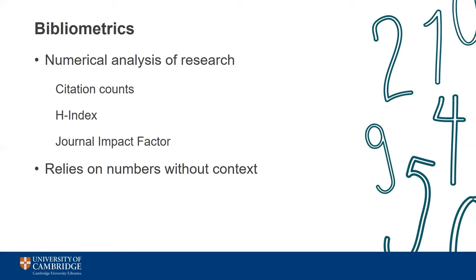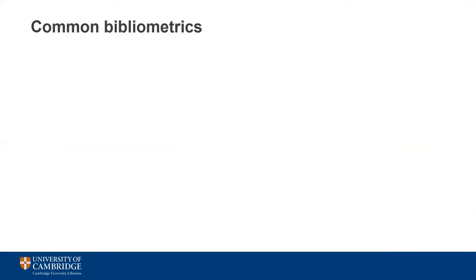Another problem with bibliometrics is that they rely solely on numbers with little or no context. Take for example a citation count — this merely counts the number of times an item has been cited but doesn't look at all at the tone of these citations. So should something cited 20 times as a piece of poor research be given more recognition than sound research that's only been cited five times, just on the basis of numbers? We'll take a look at four of the most common bibliometrics: the journal impact factor, the eigenfactor, citation analysis, and the h-index.